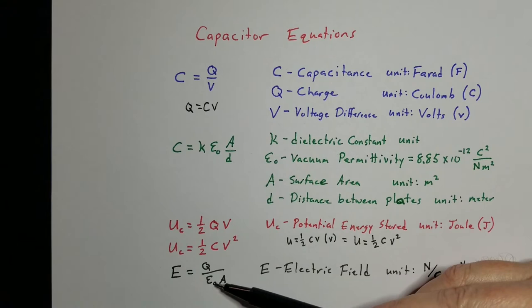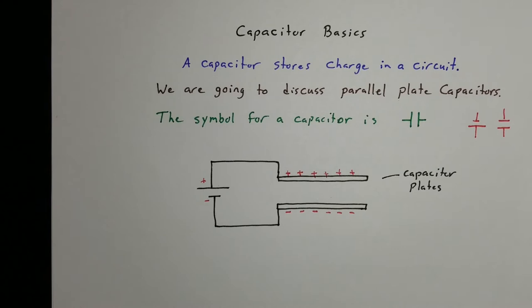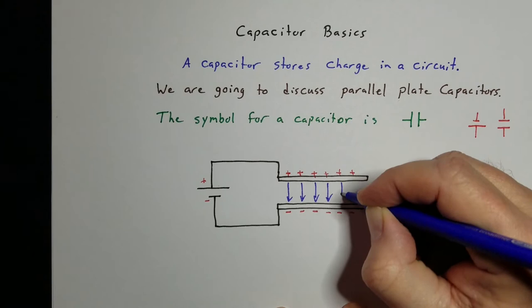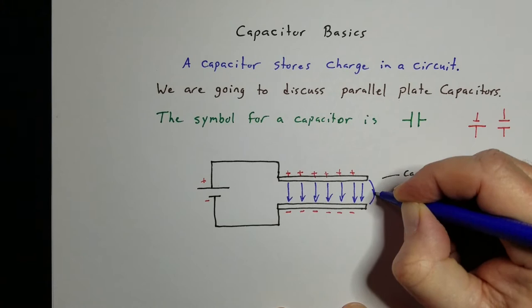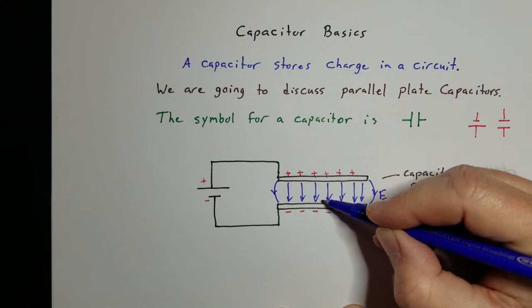What does that electric field look like? The electric field always goes from positive charge to negative charge. So between the plates, the electric field is pretty uniform and consistent. We might get some edge effects near the edges of the plates, but within the plates the electric field is essentially constant — it won't matter if you're close to one plate, in the middle, or close to the other plate.